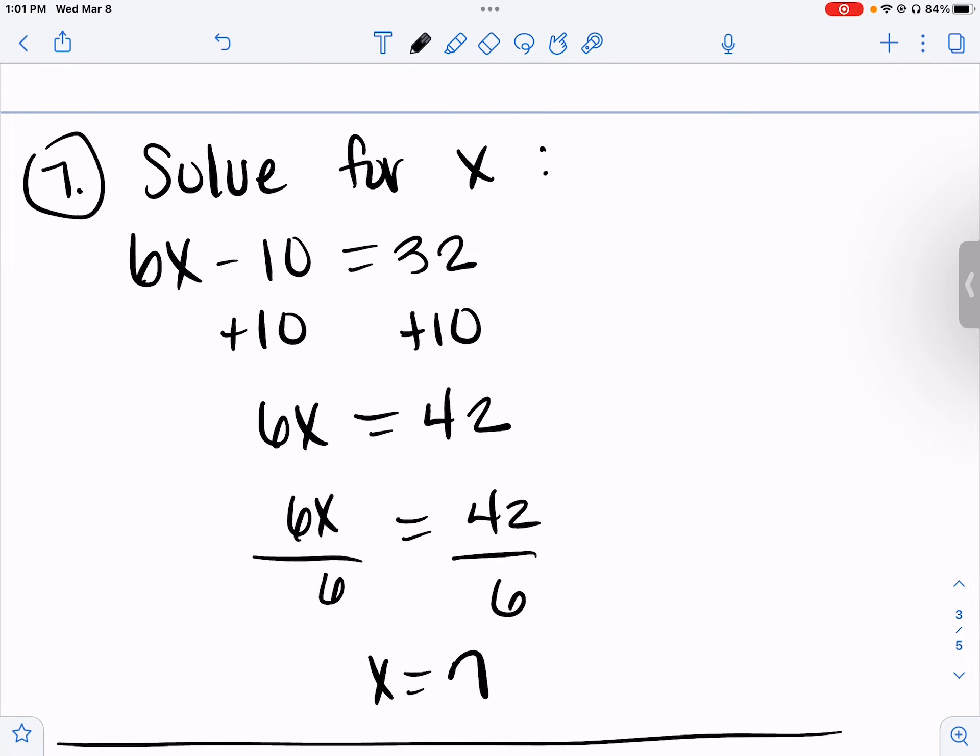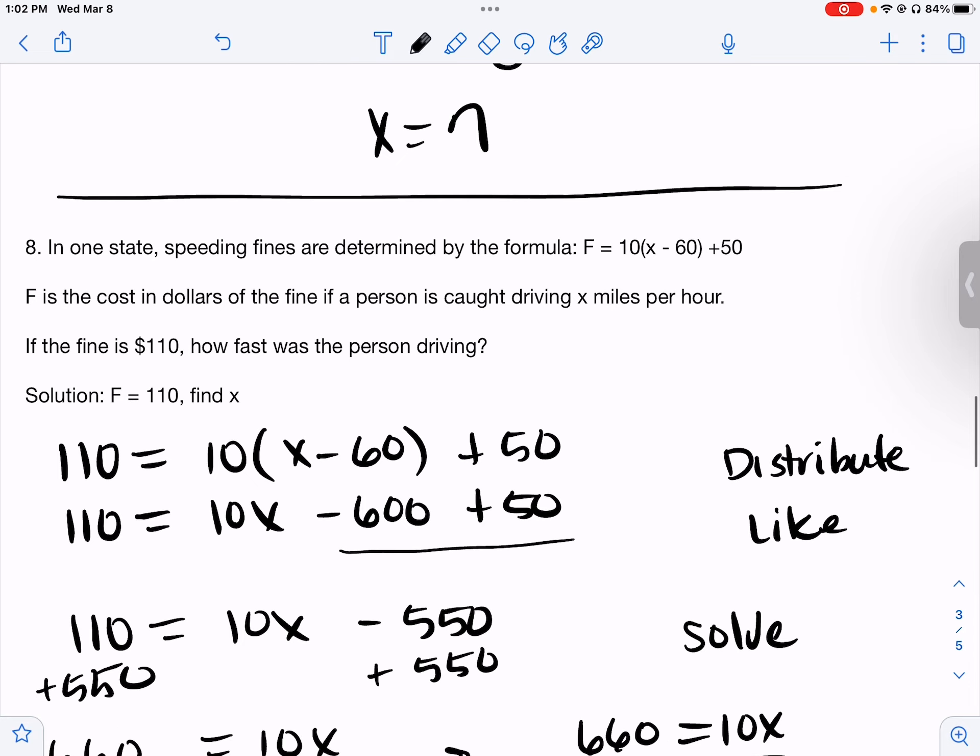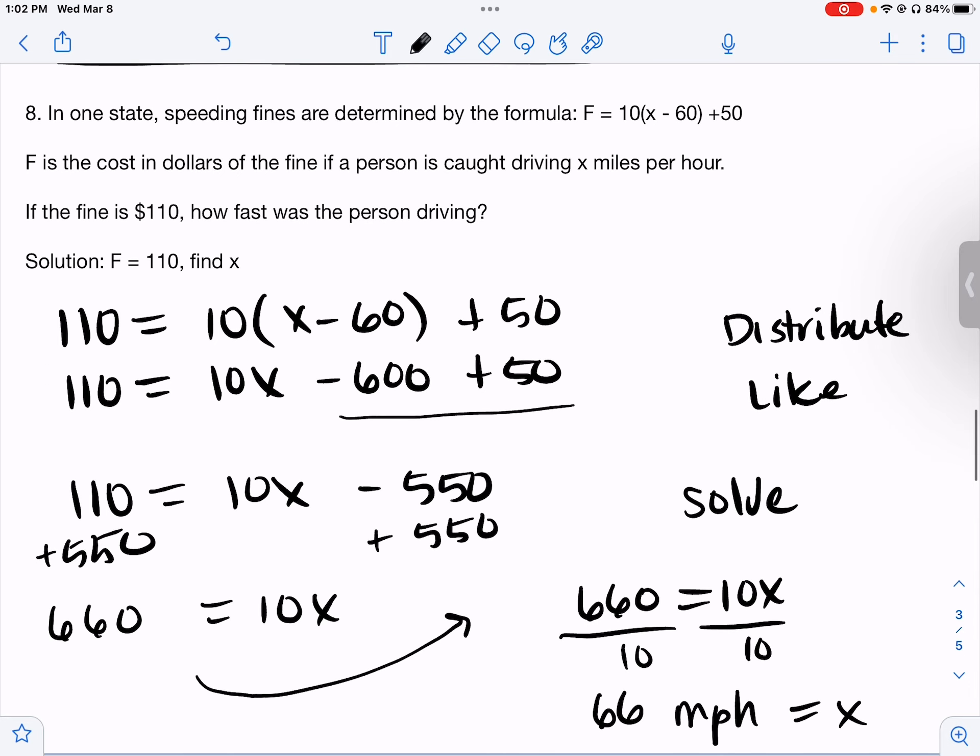Solve for x: 6x minus 10 equals 32. So we need to get rid of the subtract 10 by adding 10. 6x equals 32 plus 10 is 42. 6x means multiply, so we divide. 42 divided by 6 equals 7.